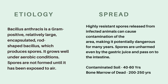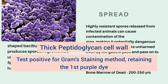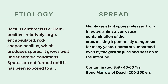Gram-positive bacteria have a thick peptidoglycan cell wall and they test positive for Gram's staining — that is, they retain the purple color dye. Bacillus anthracis grows well under aerobic conditions, that is oxygen-rich conditions, and its spores are not formed until it has been exposed to air.